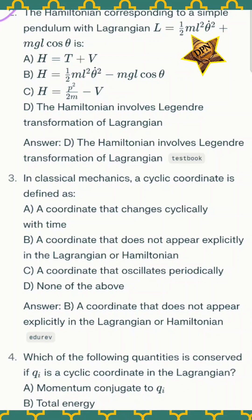Question number two: the Hamiltonian corresponding to a simple pendulum with Lagrangian L = ½ml²θ̇² + mgl cos θ is - the correct option D. The Hamiltonian involves Legendre transformation of Lagrangian.